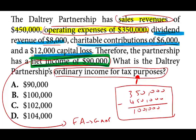What do you do with the dividend revenue, the charitable contribution, and the capital loss? Those are separately stated items and they're going to be allocated separately to the partners — shown in blue. The ordinary income for tax purposes is $100,000. If you don't know what separately stated items are, I suggest you're not ready to sit for the CPA exam yet. If you do understand this question, you have a good basic starting point. All these topics are covered in detail on my website.